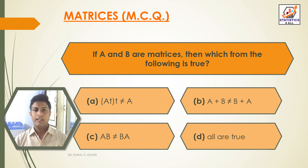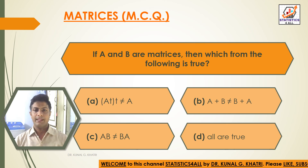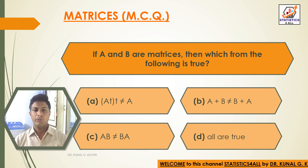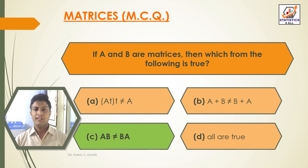Next question: if A and B are matrices, then which of the following is true — option A: (A^T)^T is not equal to A; option B: A + B not equal to B + A; option C: AB not equal to BA; option D: all are true. The answer is option C, that is AB ≠ BA, if A and B are matrices. This is not always true.